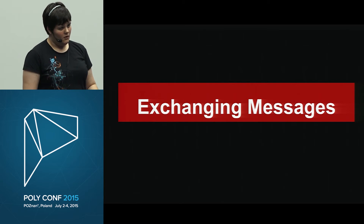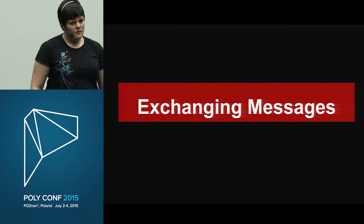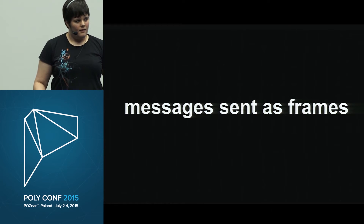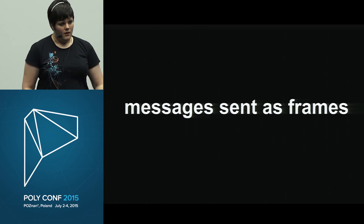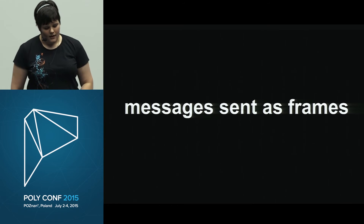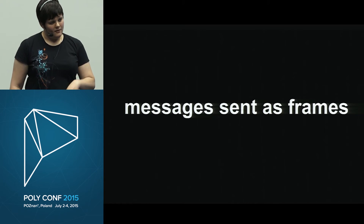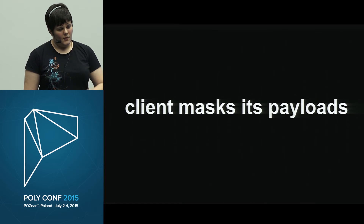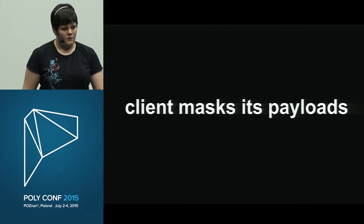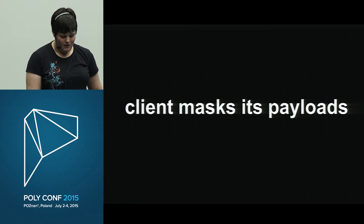Before looking at the wire protocol for messages, there are two things to know. First, the application sees data as complete messages, but on the wire they're sent as frames. Some messages are one frame, but messages can be sent as multiple frames — a frame is just the data plus a header, and you concatenate them back together to get the full message. Second, the client masks its payloads — the browser does an XOR operation on the data before putting it in the frame, and the server unmasks it before handing it to the application.